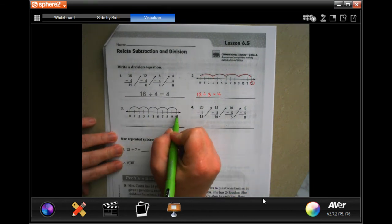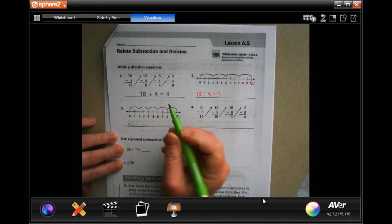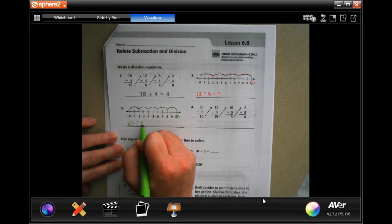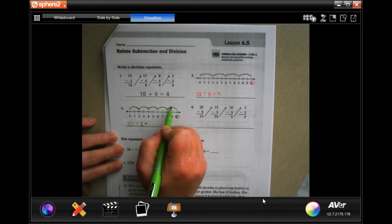The end result is 10, divided by... we're counting by two, which equals... we have one, two, three, four, five of those.